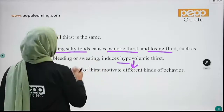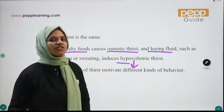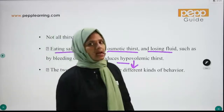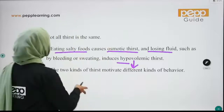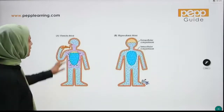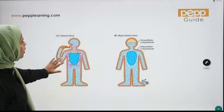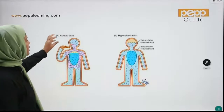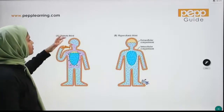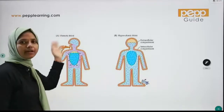These two kinds of thirsts lead to two kinds of behavior. Let's talk about these two types. When we eat salty foods, the thirst is triggered. We need to maintain the balance for our body.